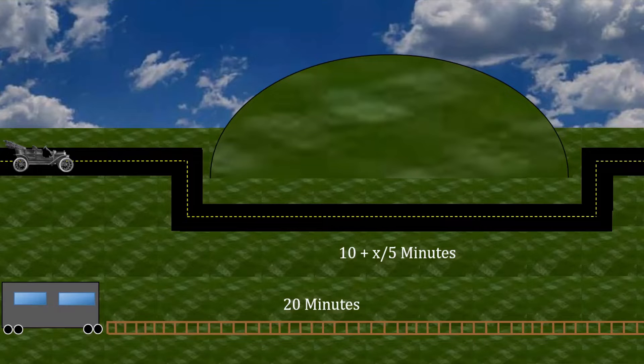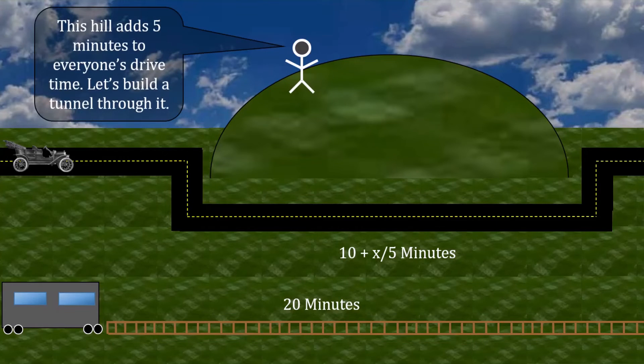Part of that 10 minute baseline is because of the mountain. The freeway has to inefficiently go around it, which adds 5 minutes to every driver's travel time. One day, the city travel manager gets fed up with the situation and makes an announcement: This hill adds 5 minutes to everyone's drive time. Let's build a tunnel through it.